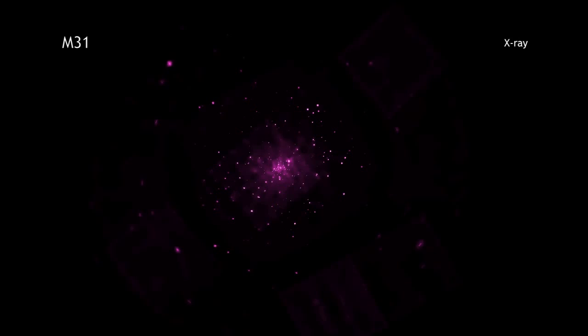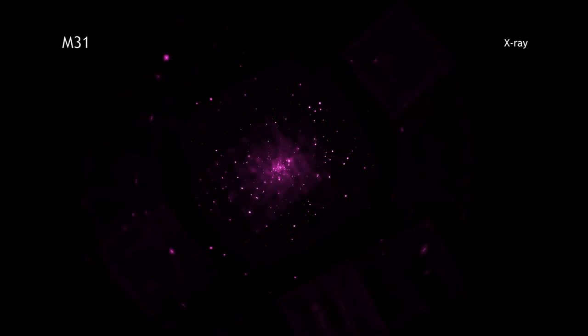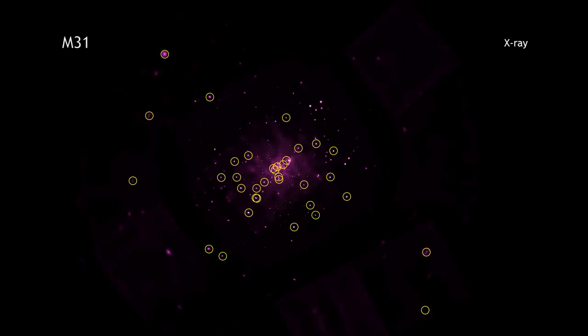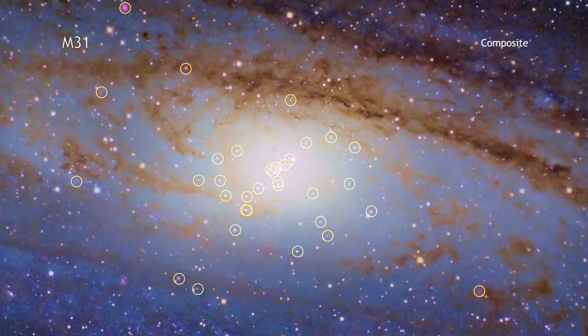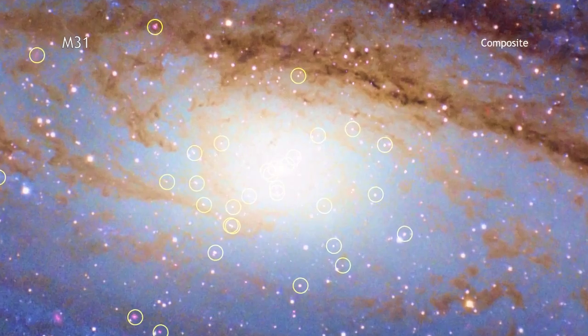After combining over 150 Chandra observations spread over 13 years, researchers discovered 26 new black hole candidates in Andromeda. This is the largest number to date found in a galaxy outside our own.